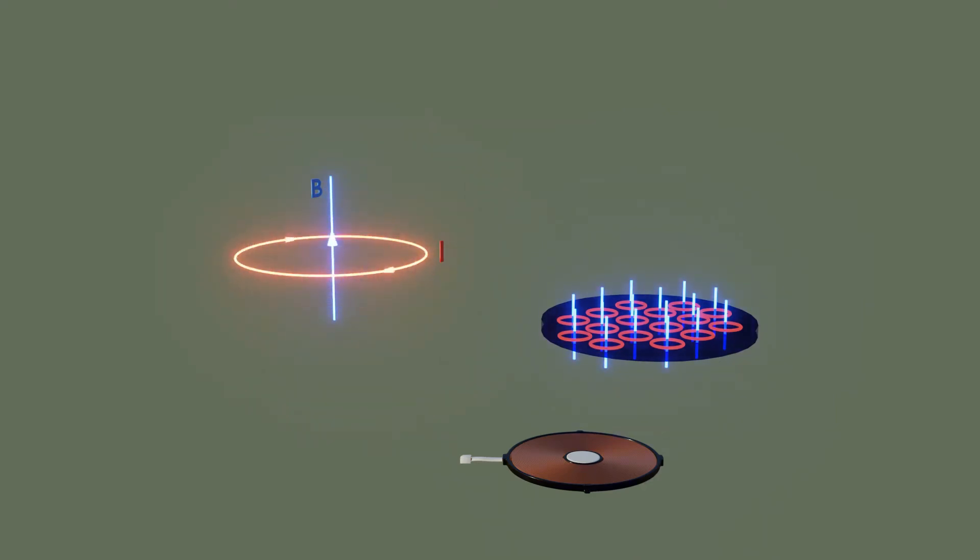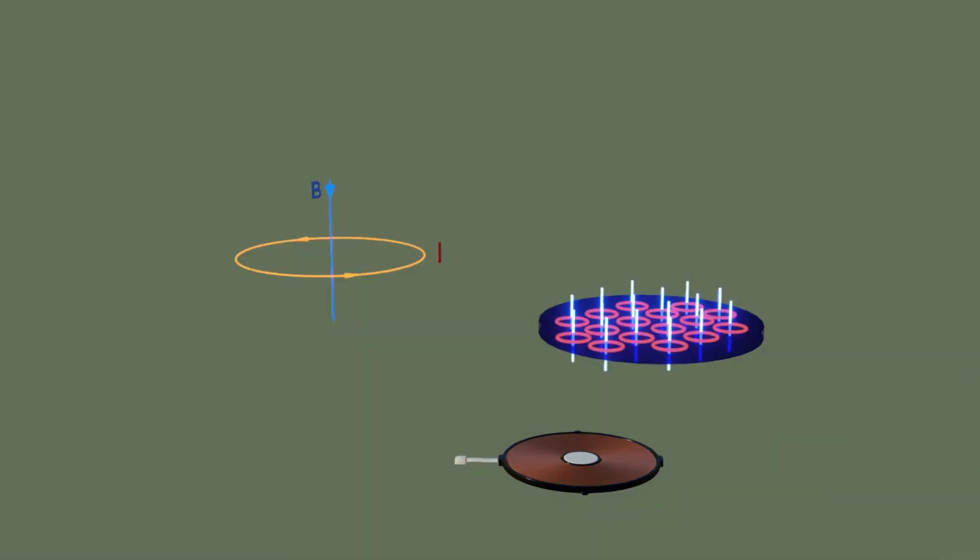These eddy currents will generate heat in the pan and make it hot. The animation you see now is in slow motion. However, the magnetic field is oscillating very fast in reality, at about 20 to 30,000 Hz. We will talk about it later.